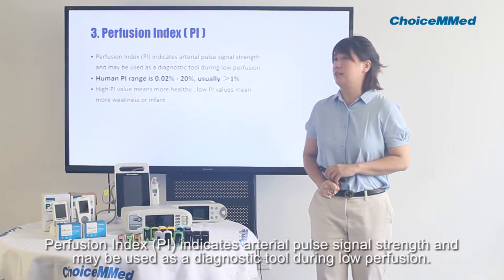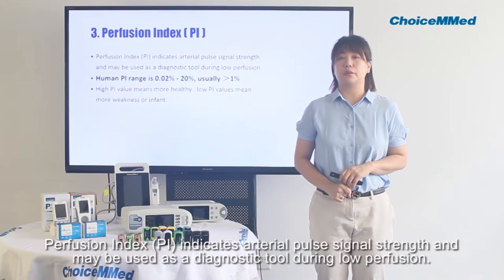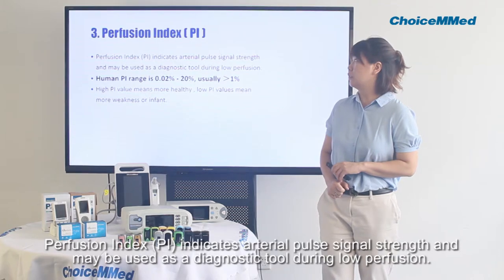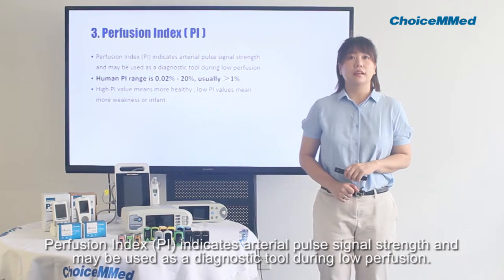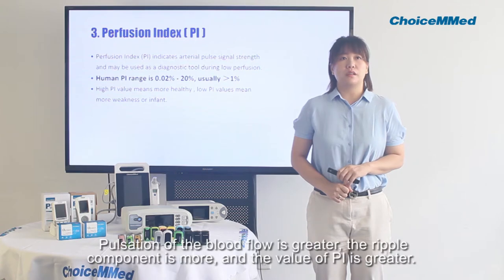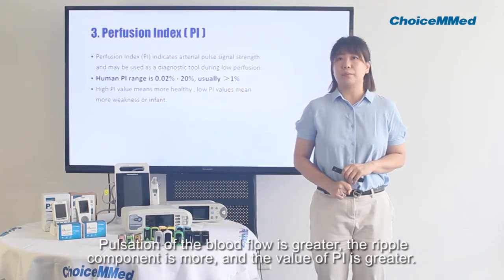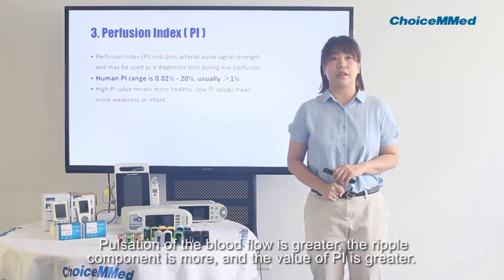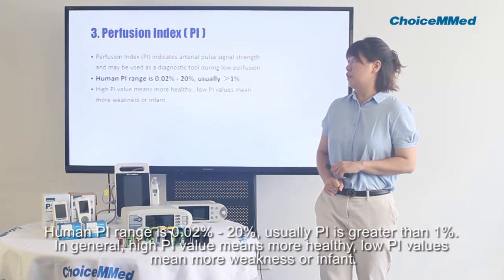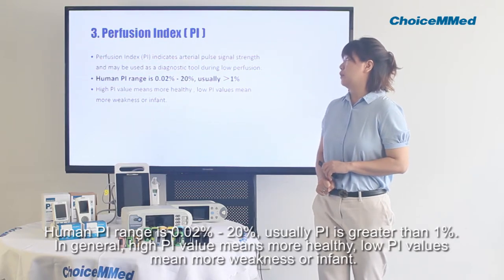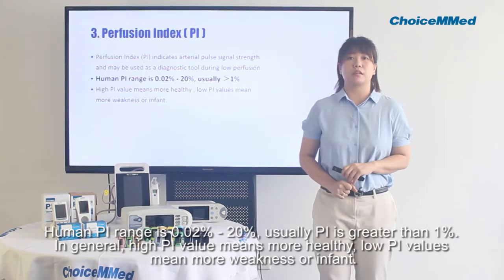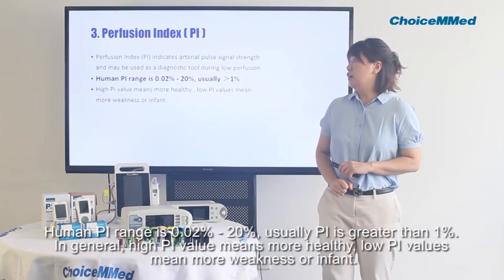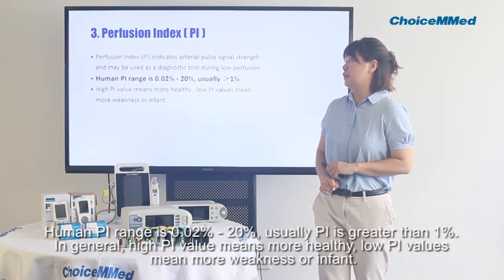Perfusion index indicates the arterial pulse signal strength and may be used as a diagnostic tool during low perfusion. When perfusion of the blood flow is greater, the arterial complement is more and the value of PI is greater. The human PI range is about 0.02% to 20%, usually greater than 1%. In general, a high PI means healthier, while a low PI may indicate weakness or an infant patient.